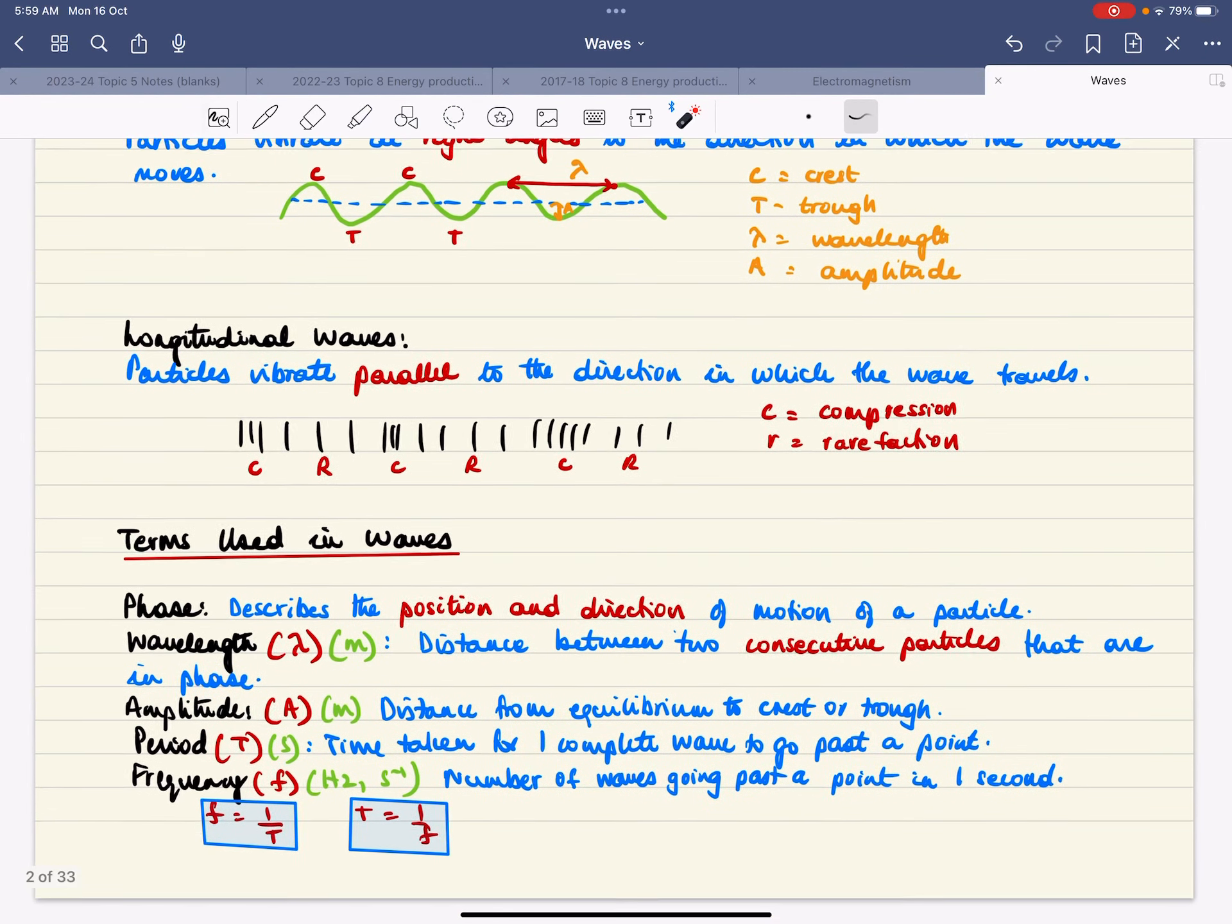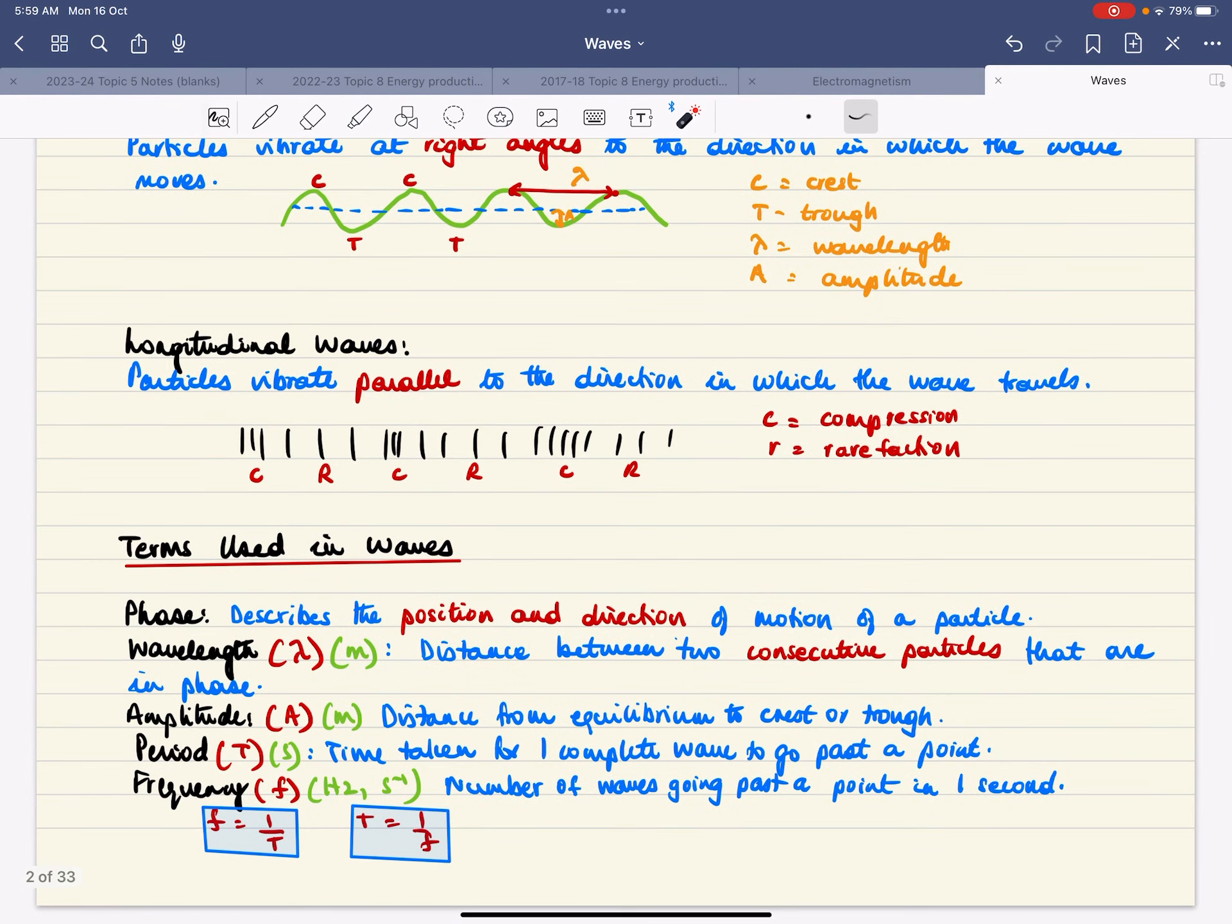There are some terms used in waves. The word phase describes the position and direction of motion of a particle. Wavelength is the distance between two consecutive particles that are in phase. Amplitude is the distance from equilibrium to either a crest or a trough.